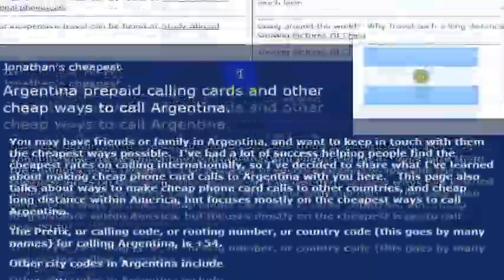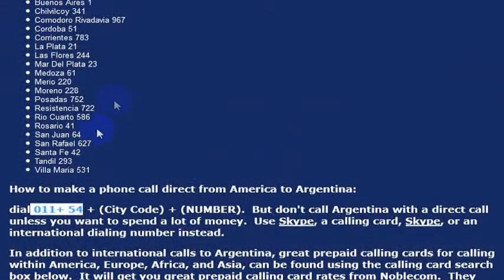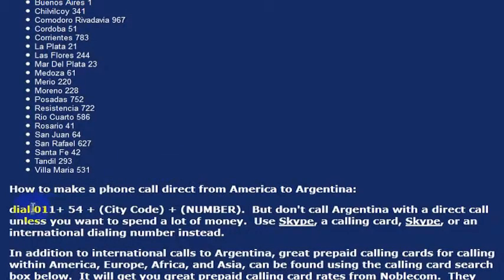If you wanted to call Argentina from the United States and you wanted to call directly, you could dial 011 plus 54, and then you would dial the city code of the city that you're calling and then the phone number. With cell phones and all kinds of changes that have happened in telecom, there are some less expensive ways to make phone calls, which we're going to walk through here. But you can just dial Argentina directly if you want to spend a little more money and your phone is internationally enabled, simply by dialing 011 plus 54.